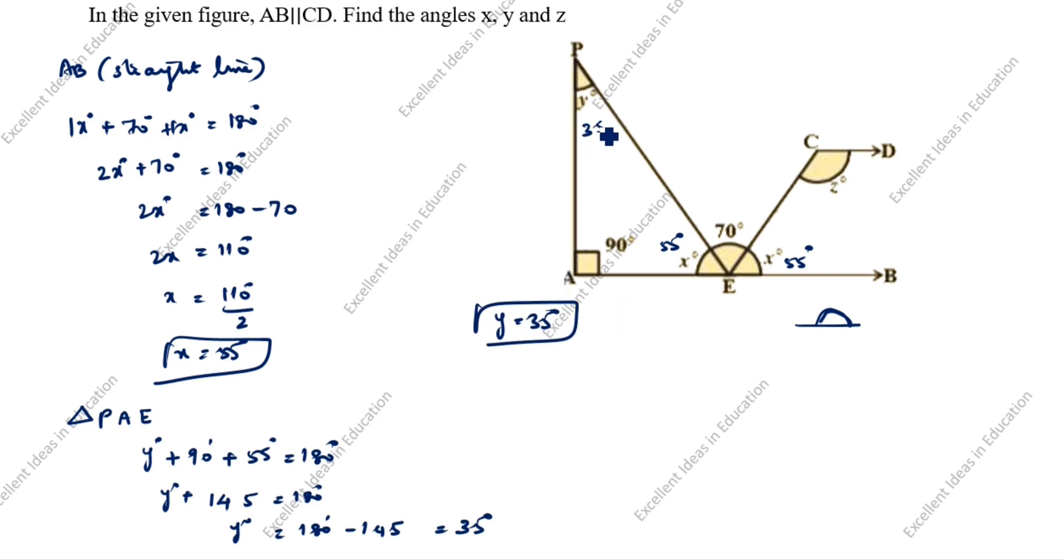This value is 35 degrees. Add these three: 35 plus 55 is 90, 90 plus 90 is 180. Verified.